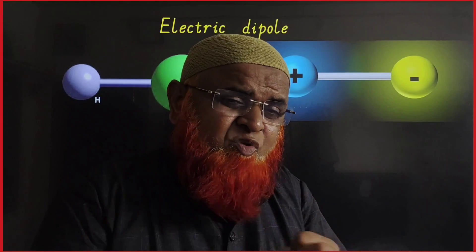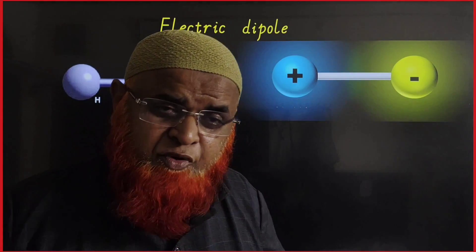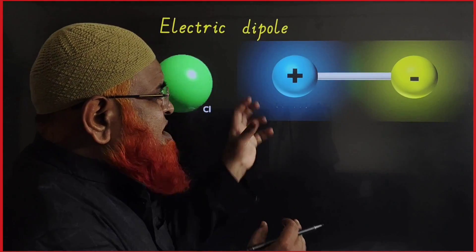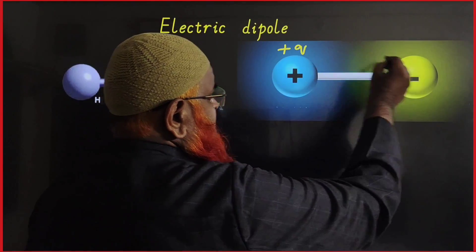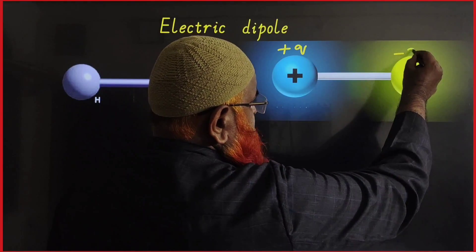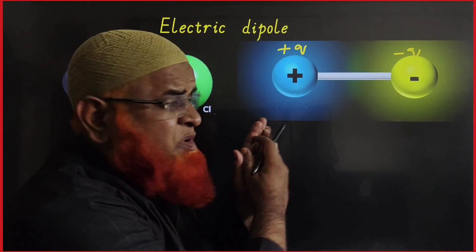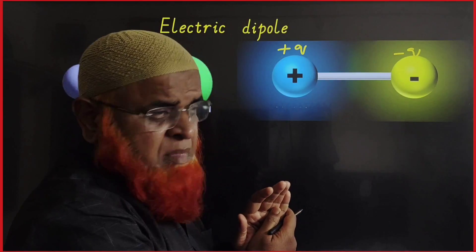Dear students, let me discuss what is the meaning of electric dipole. Electric dipole is nothing but a positive charge +Q and a negative charge -Q having a certain finite distance between them.